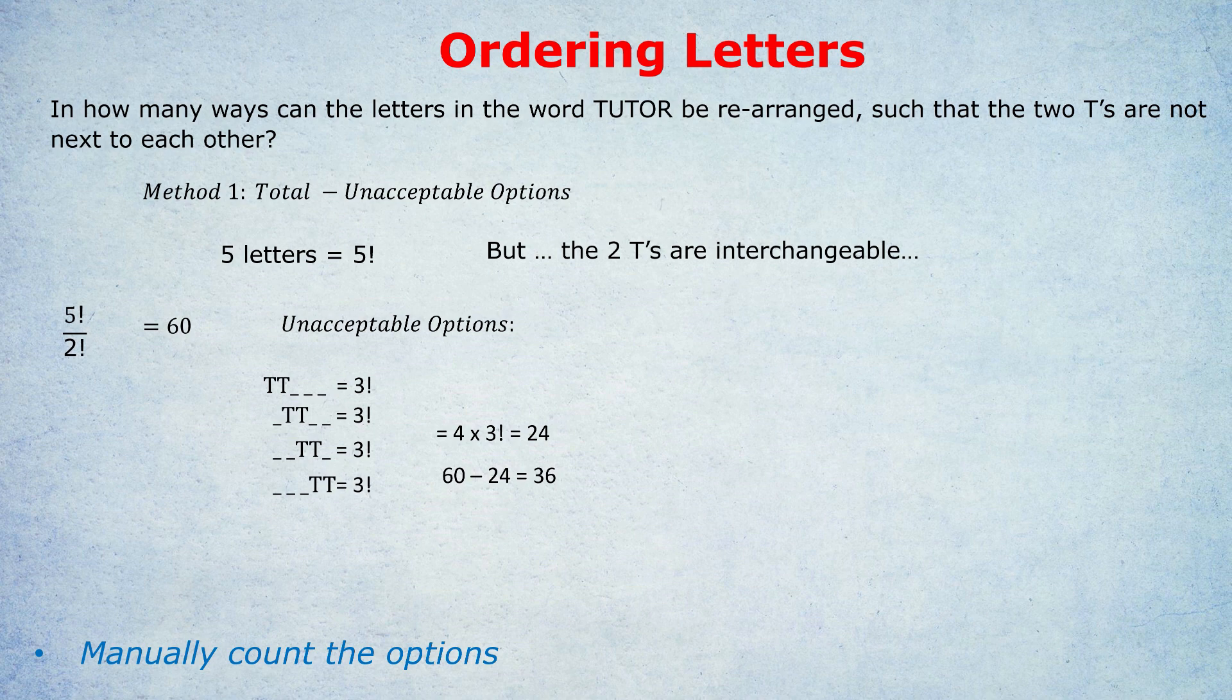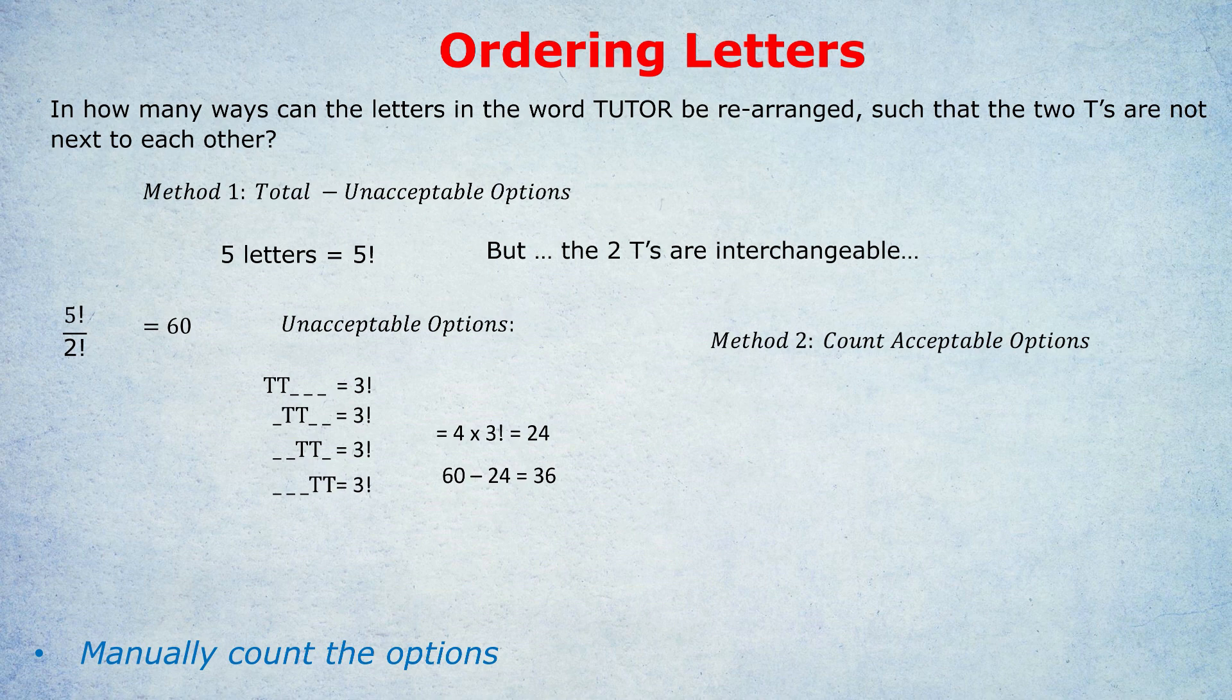Now, many of you who attempted this question by pausing it may have tried another method. So I'm going to show you method two. And that's simply counting the acceptable options. Instead of doing the total minus unacceptable, we just go straight for the acceptable options. You have to be a bit more dexterous with manually counting out the different T positions. But it's a fun way of doing it. I'm not sure which way I would have done in the exam, either way.